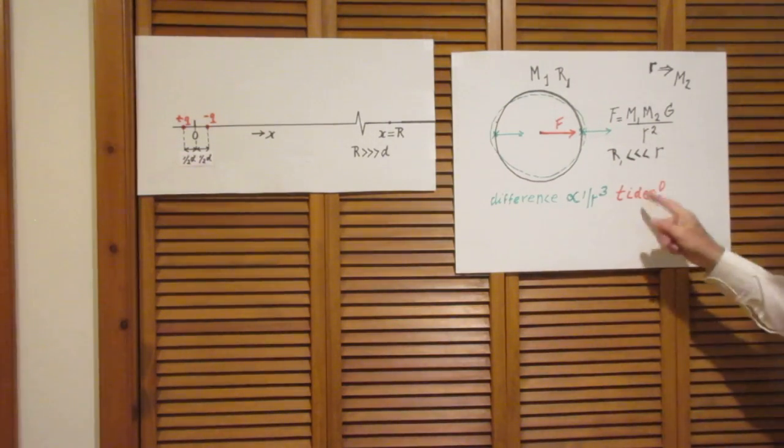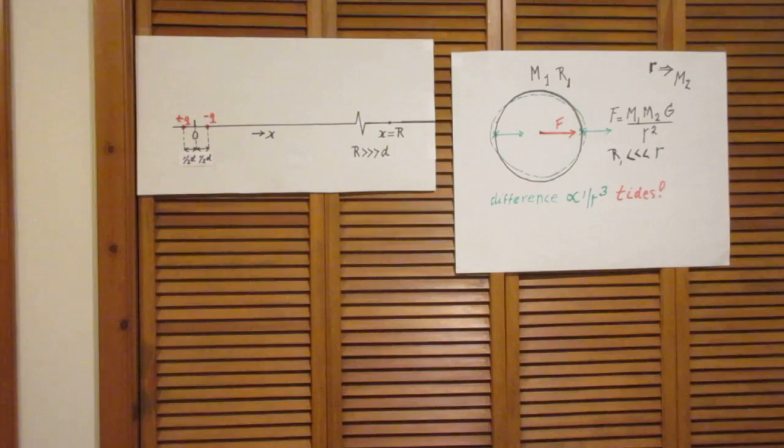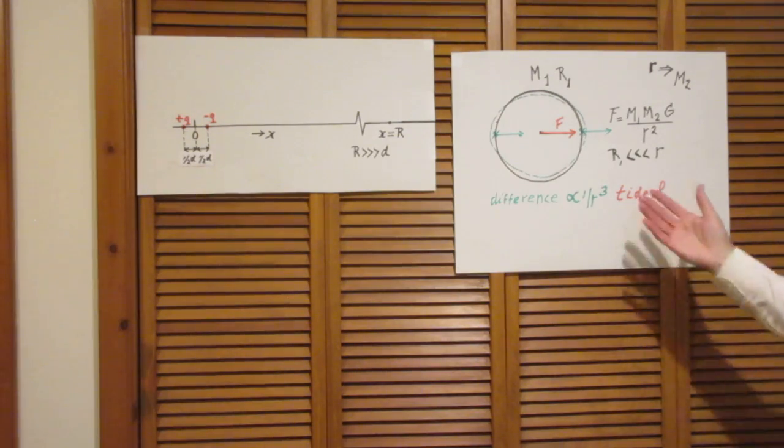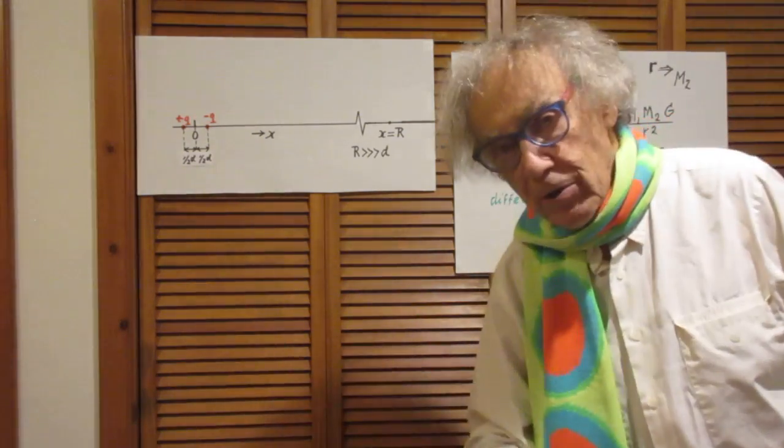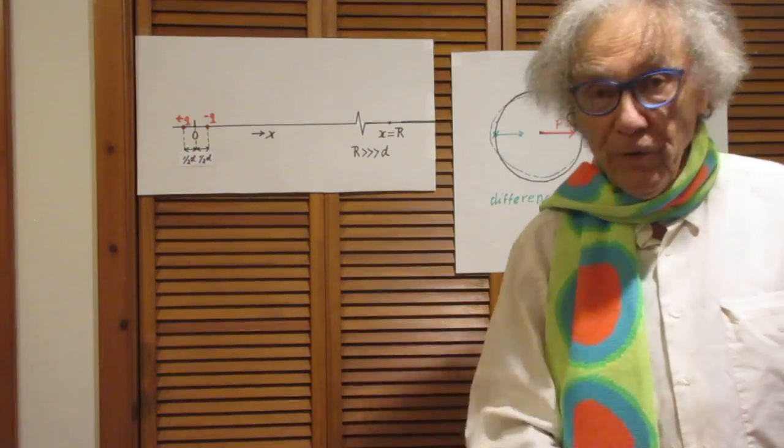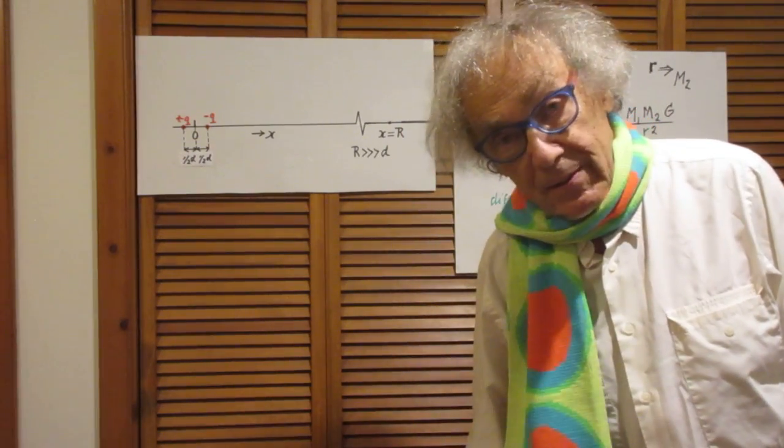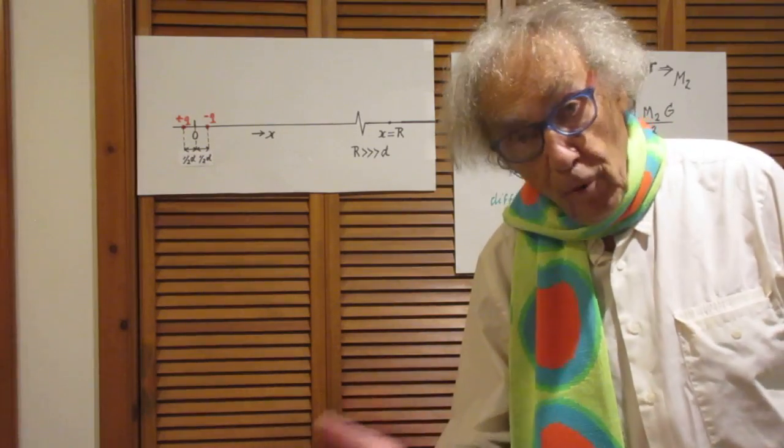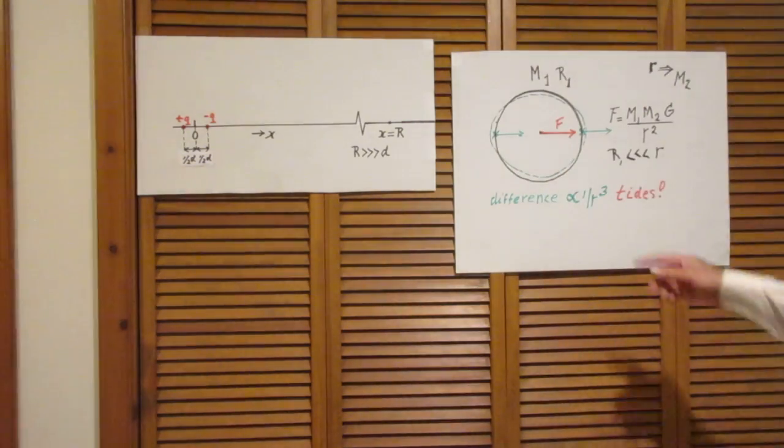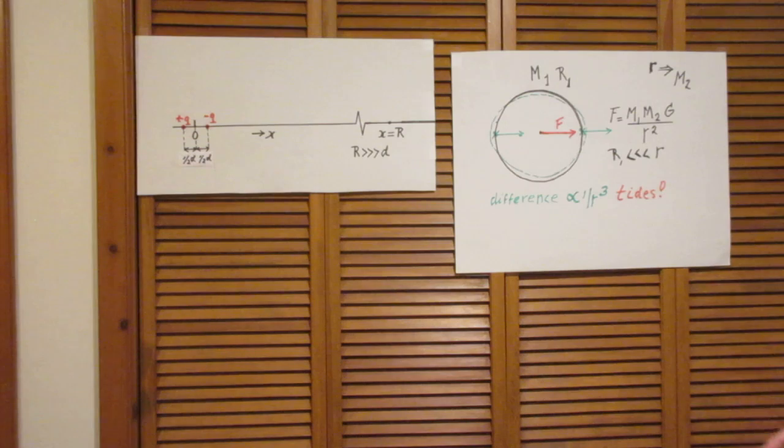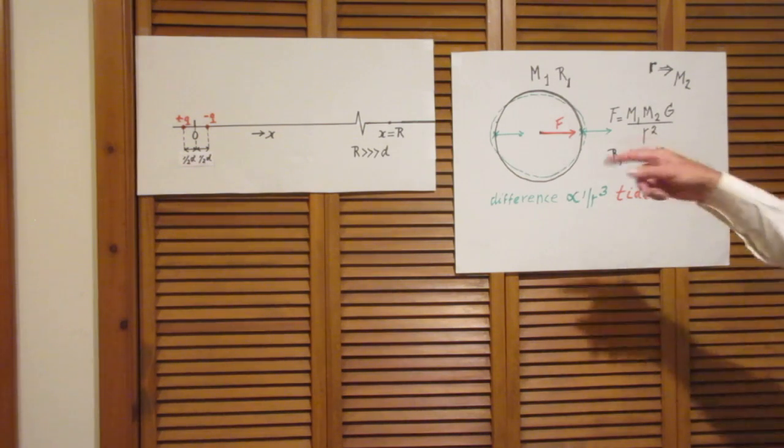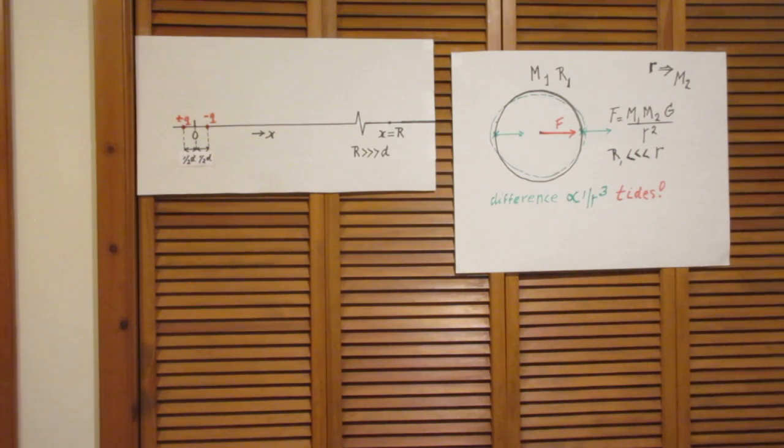So that is responsible for tides on Earth. And not only on Earth, but on all binary star systems or all systems stars with planets. There are tidal forces. And in our case, the moon's influence on us is larger than the influence of the sun on us. So that is why I have only taken the moon here.